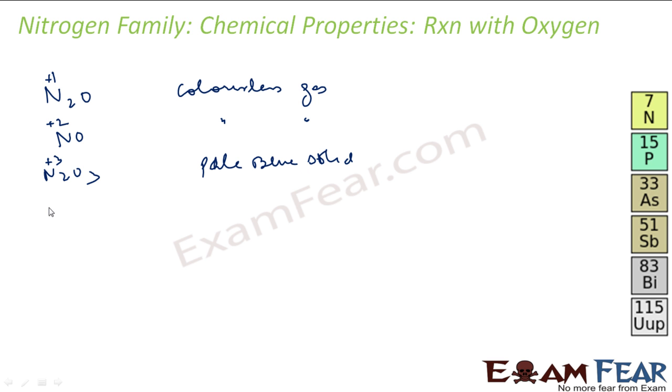If we talk about NO2, that is nitrogen dioxide, oxidation state is plus four, and this is brown gas.